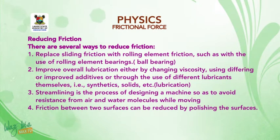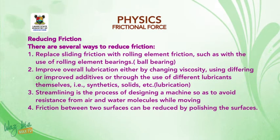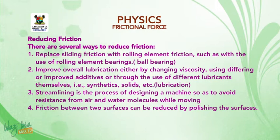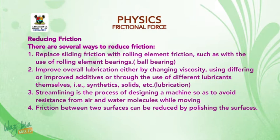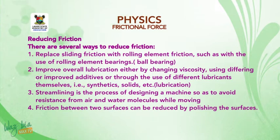Ways of reducing friction. There are several ways to reduce friction. 1. Replace sliding friction with rolling element friction — for example, ball bearings. 2. Improve overall lubrication by changing viscosity, using different or improved additives, or using different lubricants such as grease or oil. 3. Streamlining — the process of designing a machine to avoid resistance from air and water molecules while moving. 4. Polishing surfaces — friction between two surfaces can be reduced by polishing them.